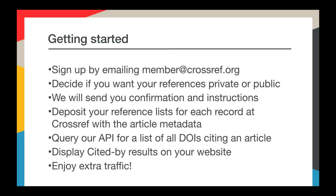For those thinking about participating in Cited by, here's how to get started. You can sign up by emailing member at Crossref.org. You can decide if you want your references private or public, and we will send you a confirmation and instructions. Then deposit your reference lists for each record at Crossref with the article metadata. You can query our API for a list of all DOIs citing an article, and then display the Cited by results on your website and enjoy extra traffic.